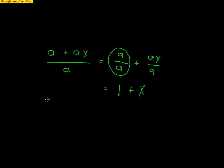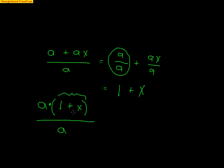The other approach is to factor out the A on top: A times (1 plus X), all divided by A. Now you have multiplication on top and bottom, so the A's can cancel, leaving (1 plus X) over 1 — which is just 1 plus X. You can double-check by distribution: A times 1 is A, and A times X is AX, which confirms the factoring.